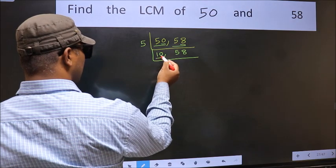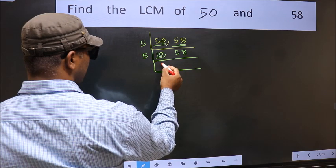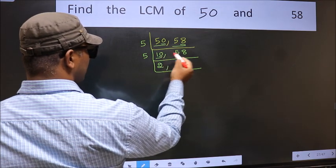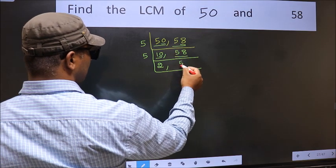Now here we have 10 last digit 0 so take 5. When do we get 10 in 5 table? 5 times 2 is 10. The other number 58 not divisible by 5 so we write it down as it is.